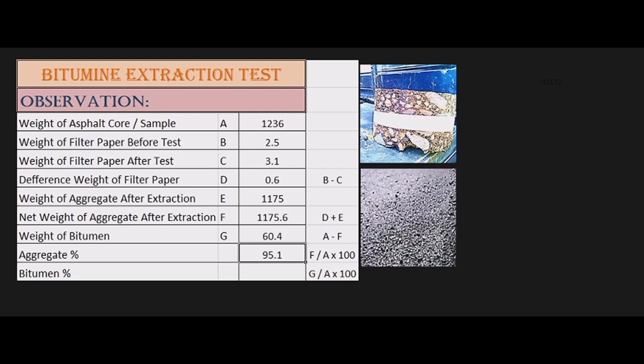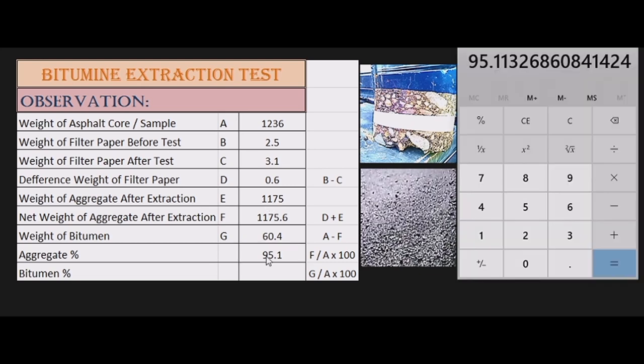The formula is G divided by total weight multiply by 100. Weight of bitumen divided by total weight multiply by 100. Or simply, aggregate percentage equals 100 minus. So 60.4 divided by 1,236 total weight, multiply by 100 equals 4.88, or 4.9 percent bitumen.